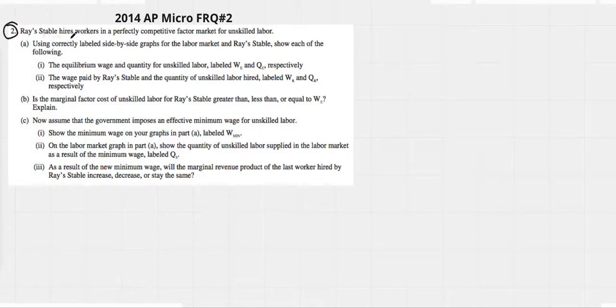Ray Stable hires workers in a perfectly competitive factor market for unskilled labor using a side-by-side graph for labor. And Ray's show the following: equilibrium wage and quantity of unskilled labor, W-E, Q-E.